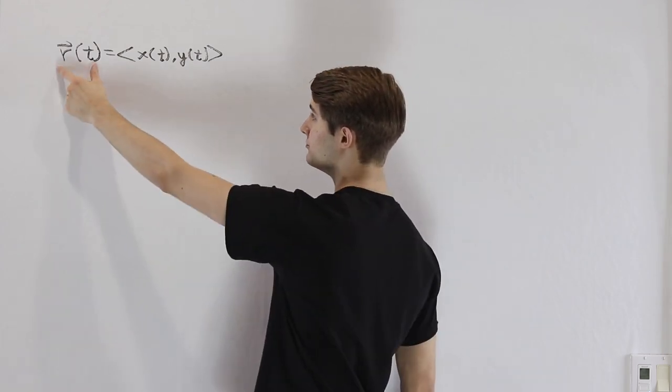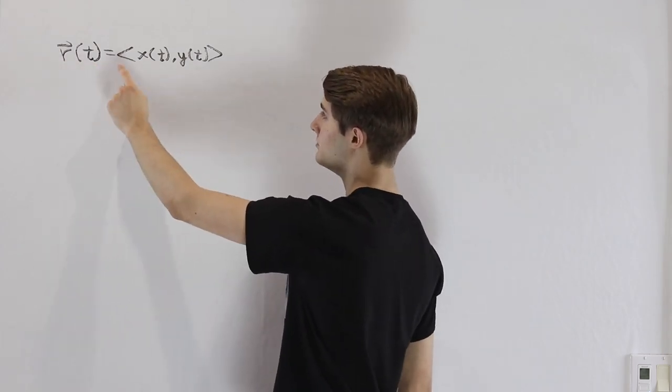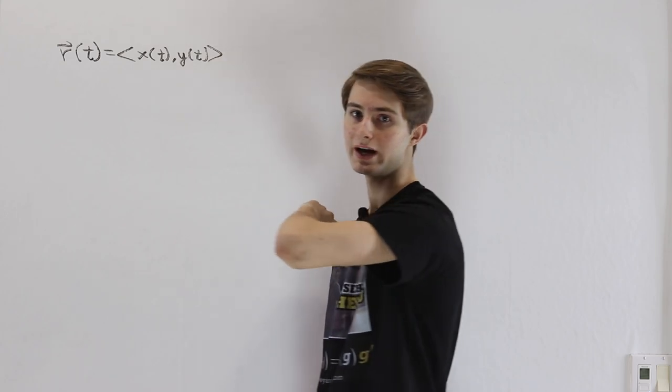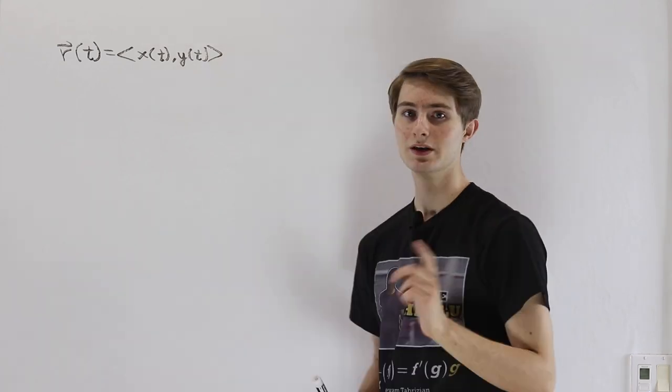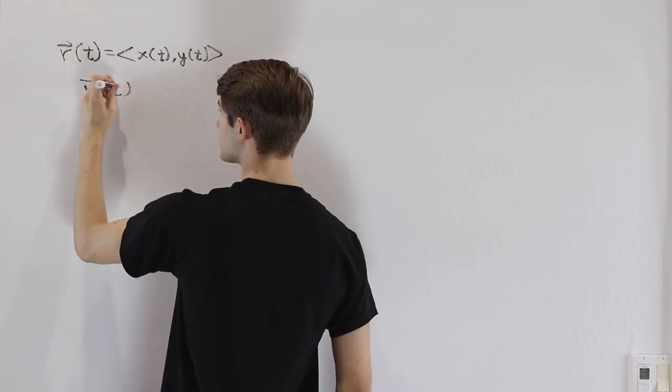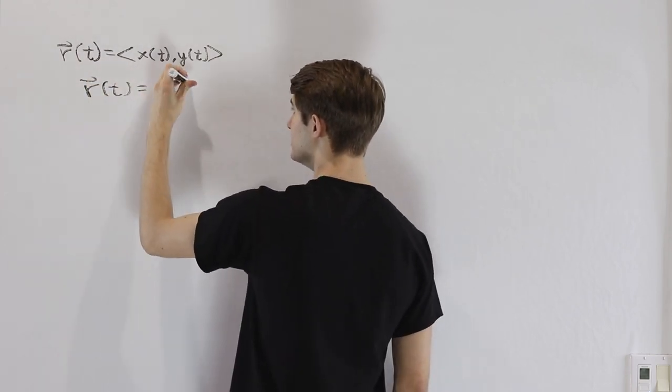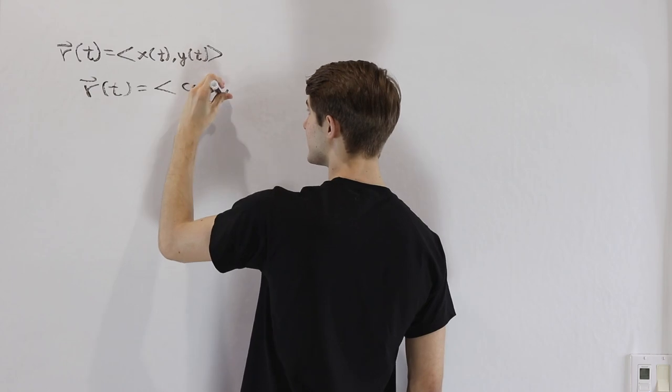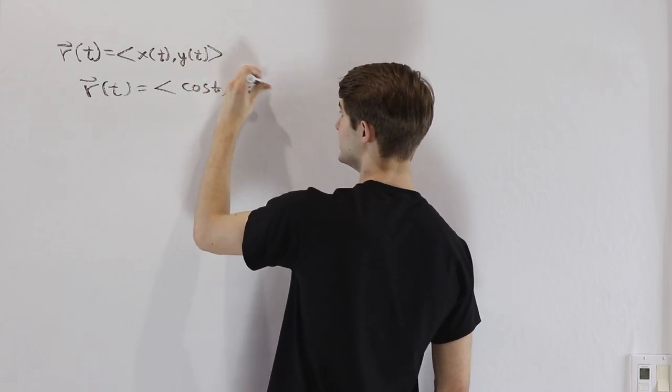In that case, we would have a vector function r(t) being equal to <x(t), y(t)> as the components. Let's look at one example of that to see exactly what is going on. If we chose r(t) to be equal to <cos(t), √t>.